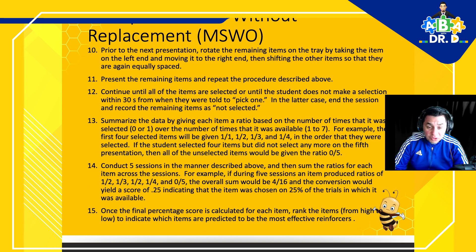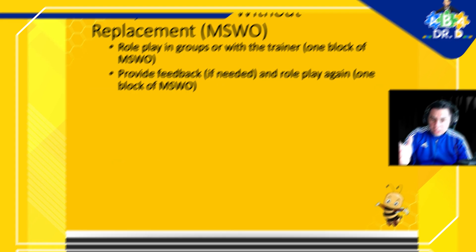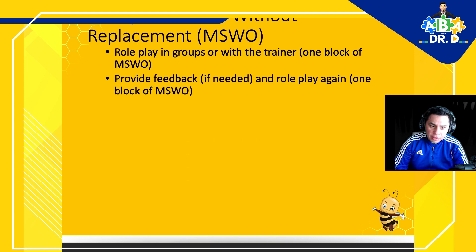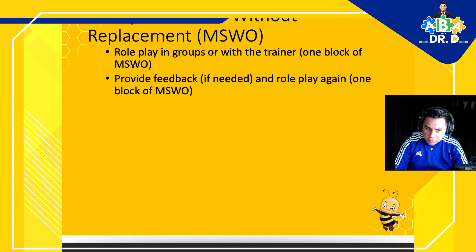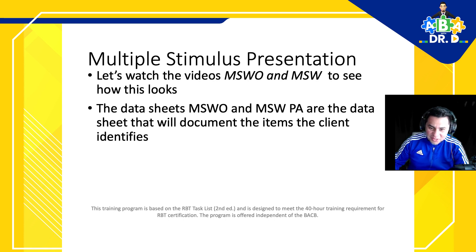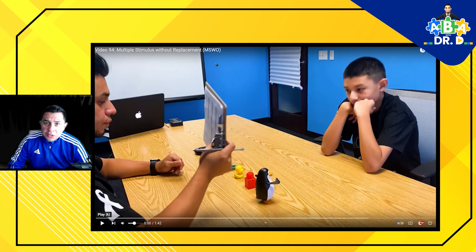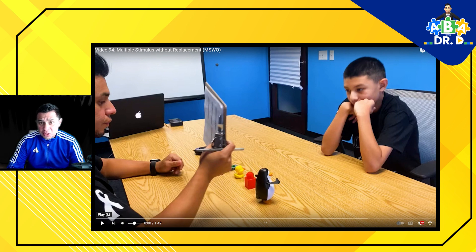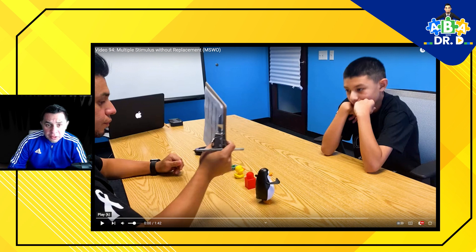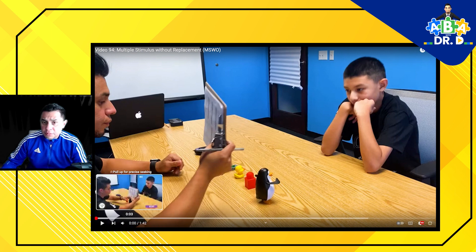We're now going to watch the video model — video number 94, called Multiple Stimulus Without Replacement, or MSWO. In this video we'll watch the implementation of MSWO and I'll be making commentary, pausing here and there to observe certain parts. If you're working with groups or training people how to run these, you can do role plays and make sure you're providing feedback throughout the process.